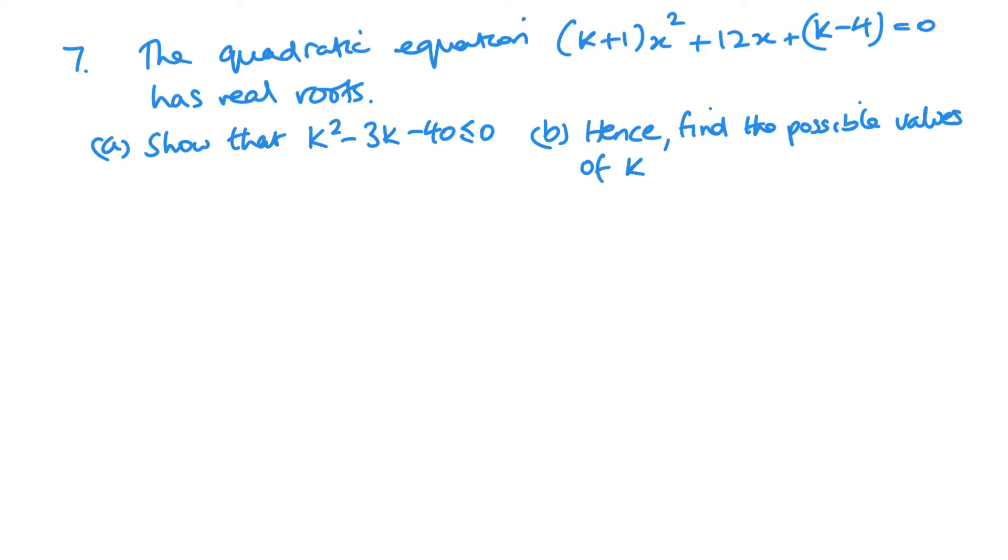Now, number 7. So here we can see we've got our quadratic equation here. And it says it has real roots. So it doesn't say that we've got one root or two distinct roots. It could be one root. It could be two roots. It just says that they're real. So in this case, we want greater than or equal to 0. So we're looking at B squared minus 4AC being greater than or equal to 0. And my A is K plus 1, my B is 12, and my C is K minus 4.